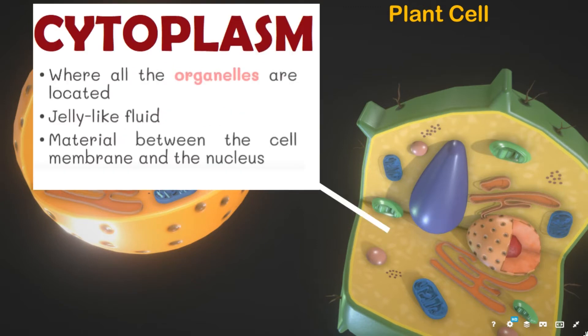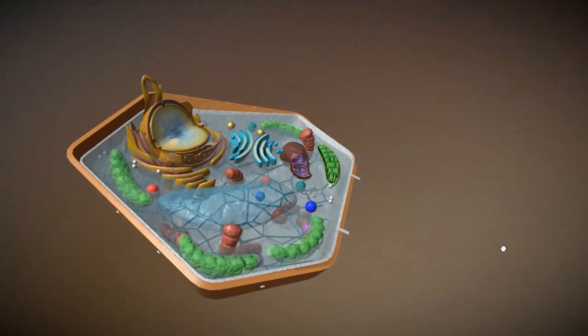The cytoplasm is where all the organelles are located and has a jelly-like fluid. It is the material between the cell membrane and the nucleus.